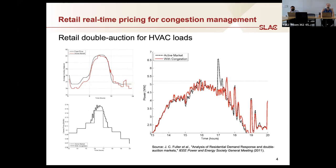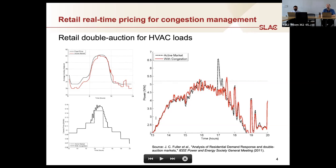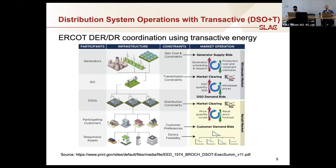Another area was retail real-time pricing: using price discovery mechanisms on the retail side, asking devices what their willingness to pay is, and through automation discovering the price at which supply equals demand given a distribution feeder constraint. We tested this using a double auction simulation. The impact on thermostat settings was not significant — no major comfort difference — but the price discovery mechanism managed the feeder constraint of about 5.2 megawatts more effectively during peak hours.